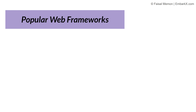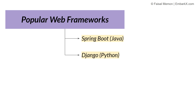Some popular web frameworks include Spring Boot — a Java-based framework known for its ability to build enterprise-grade applications quickly. Then there's Django, a Python-based framework known for its "batteries included" philosophy, meaning it includes a lot of common functionalities built in. There's also Flask, which is also Python-based — lightweight, more flexible, and great for small projects or when you need more control.